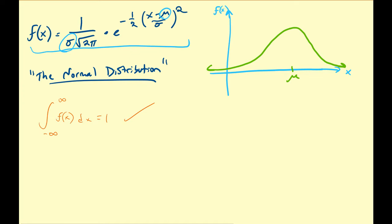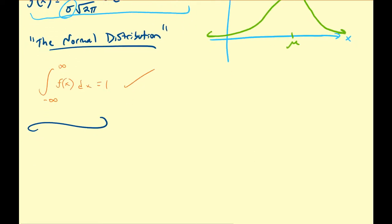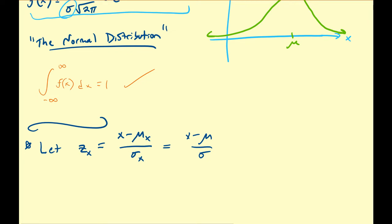So let us assume we want to calculate particular probabilities associated with this. There is going to be an easier way, so I'm going to jump straight to it. Before we do, let us briefly review something we talked about a while ago — namely the z-score. So I'm going to let z sub x be equal to x minus mu x divided by sigma x. Some people may just write this as x minus mu divided by sigma if you only have one variable. This means that z_x represents the number of standard deviations a particular value x is from the mean mu. This is what we call a z-score, and it is a measure of position.